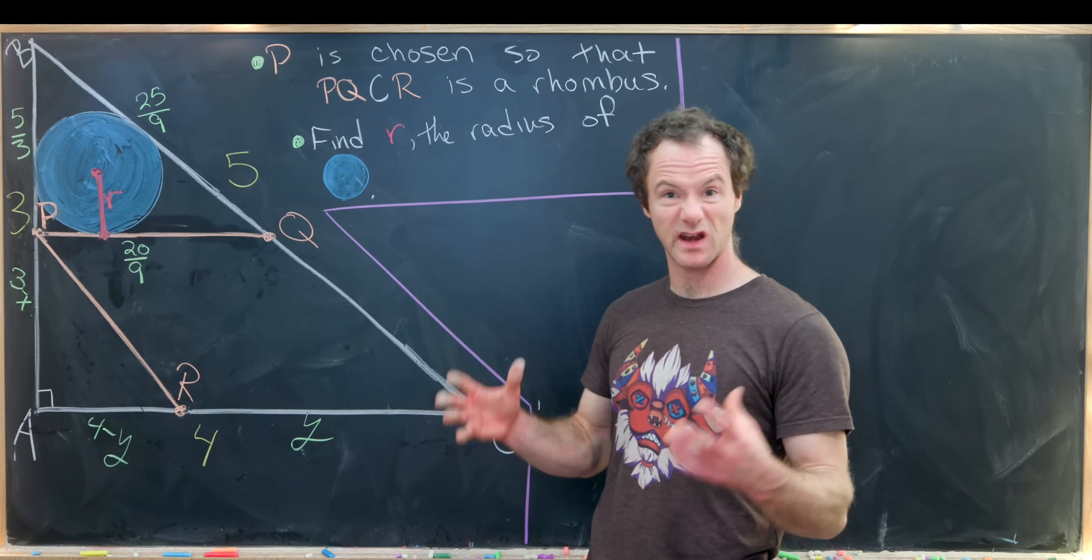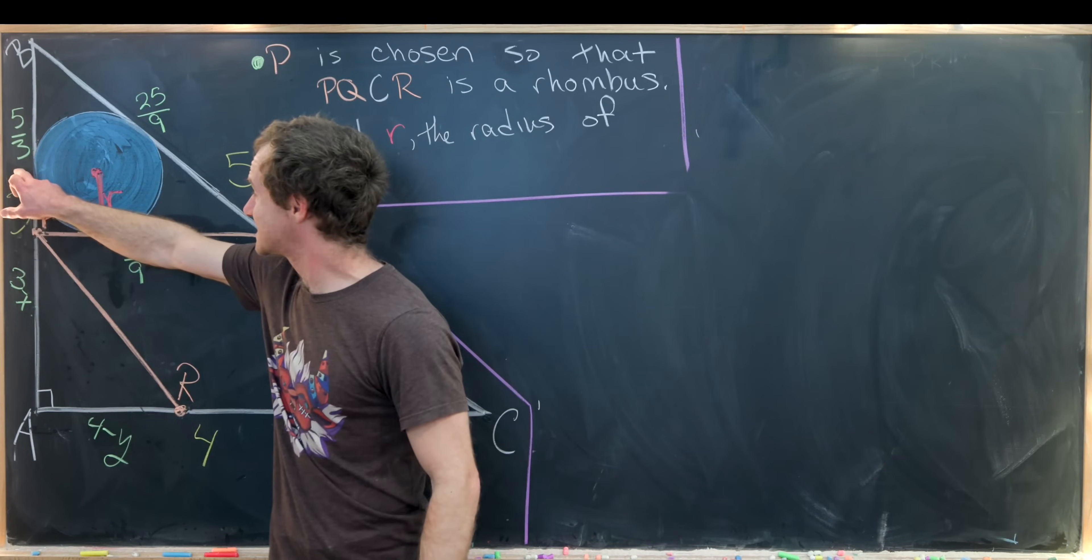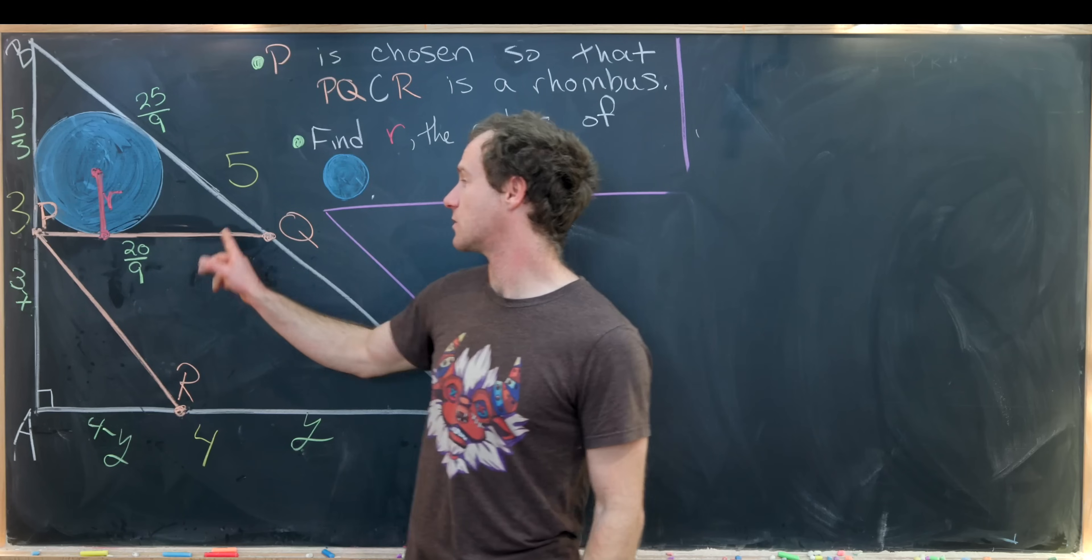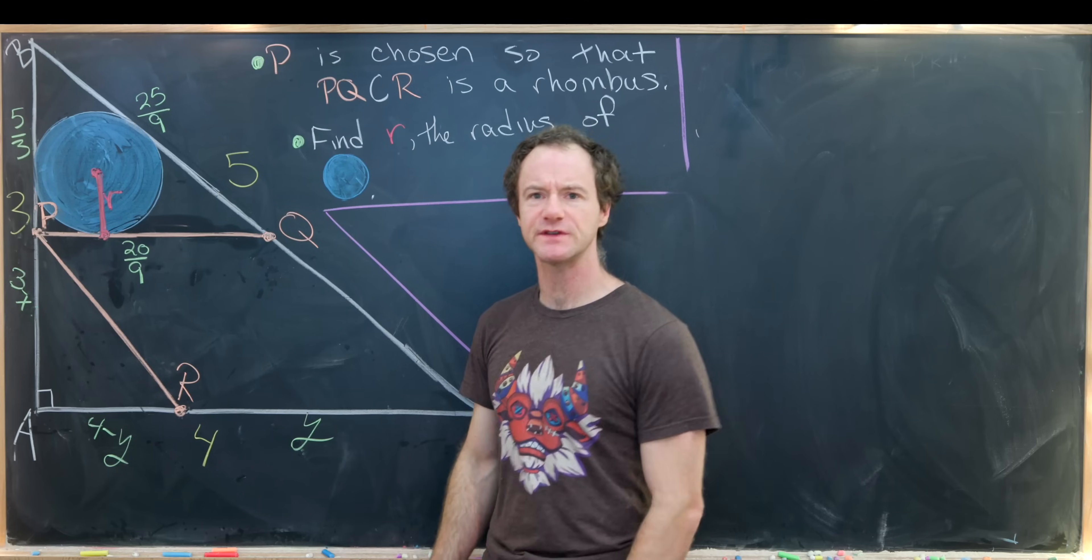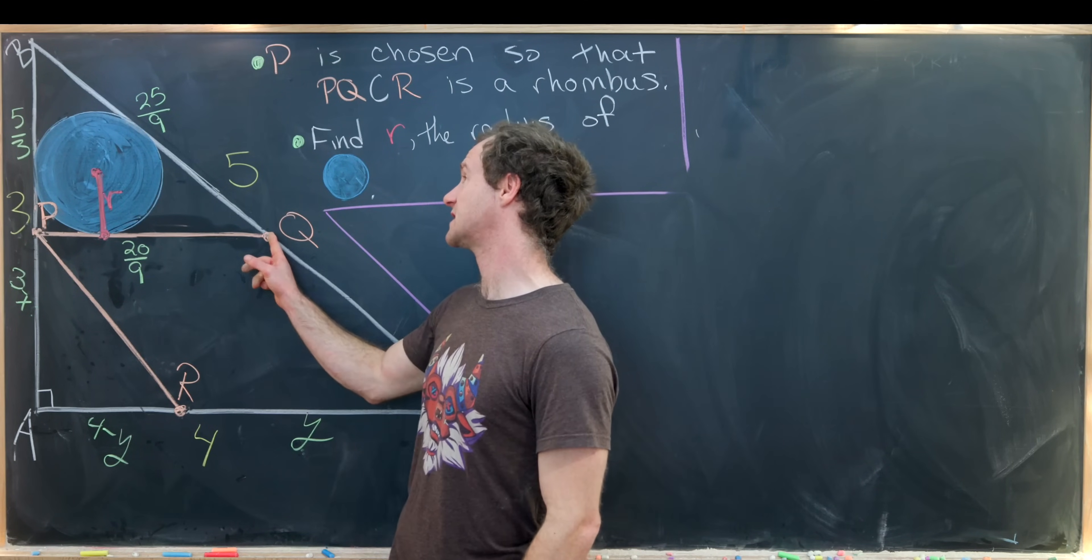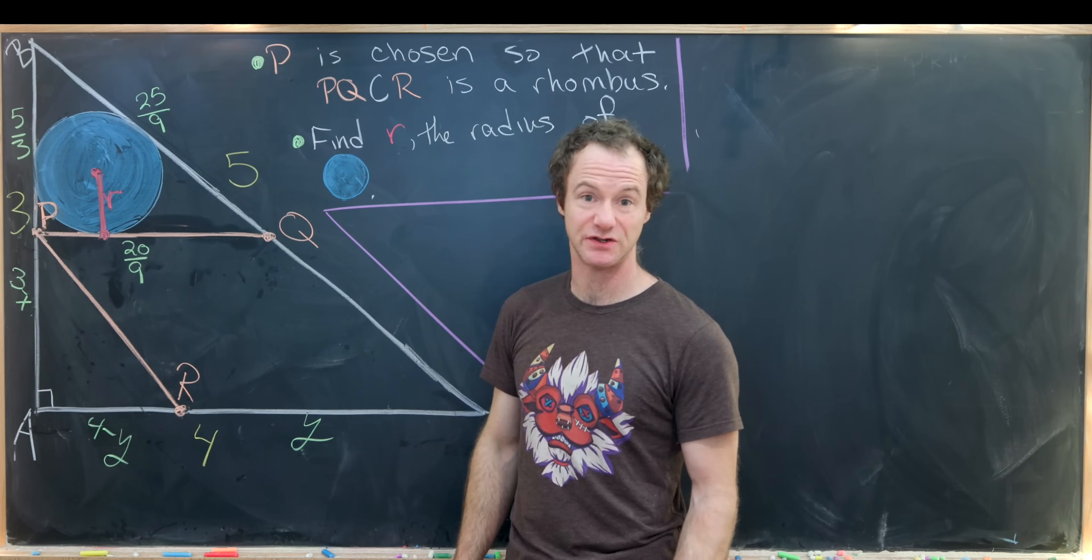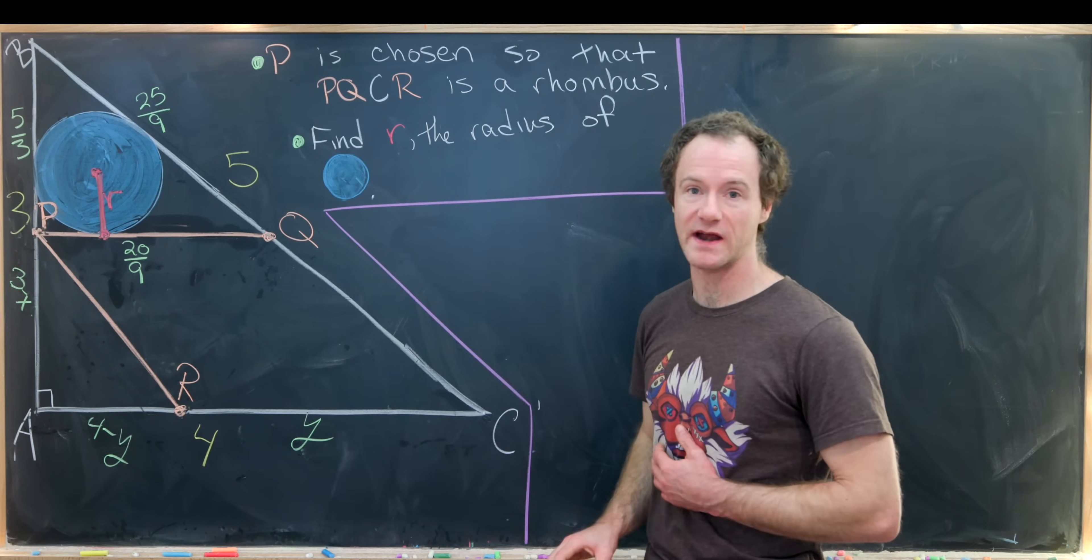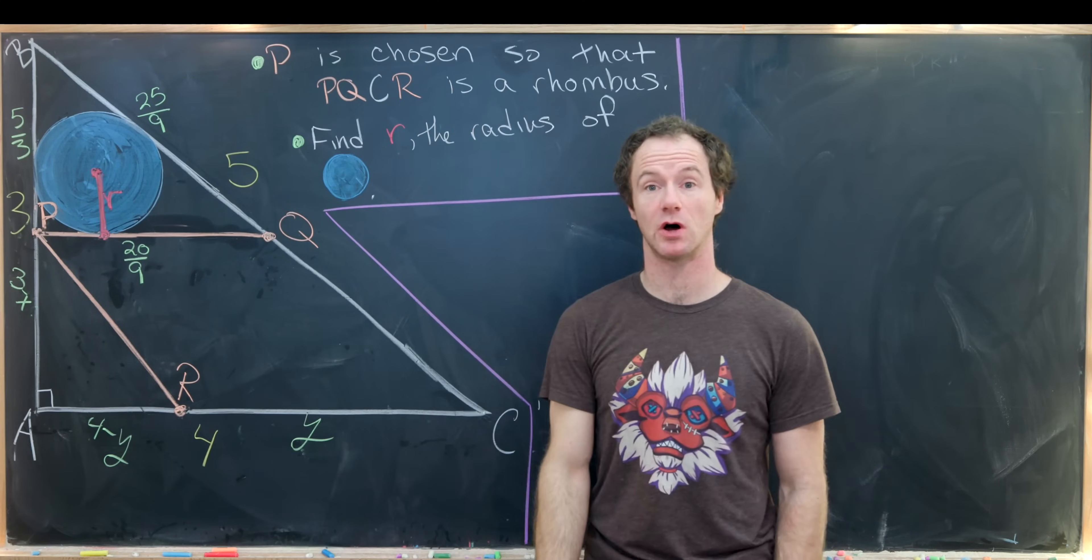We just got done calculating what we called X and Y, which ended up being this side length here, which was 5 thirds, and this side length here, PQ, which was 20 over 9. Now we can use the Pythagorean theorem to find this length here, BQ, and that's actually 25 over 9. That's not too hard to check. So from here, I'm going to clean this up quite a bit and then we'll zero in on exactly what's happening with this smaller triangle.